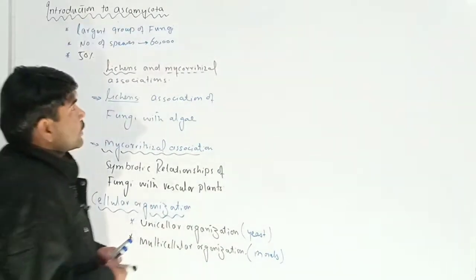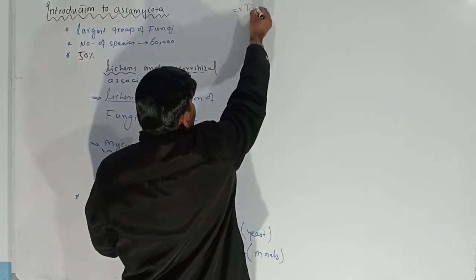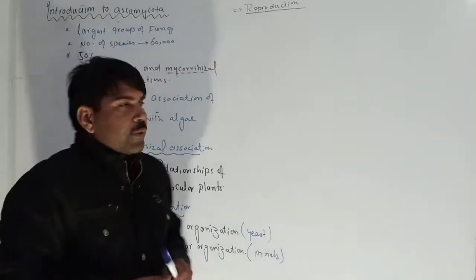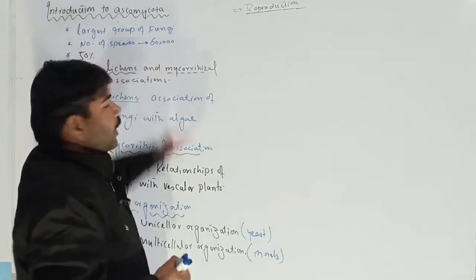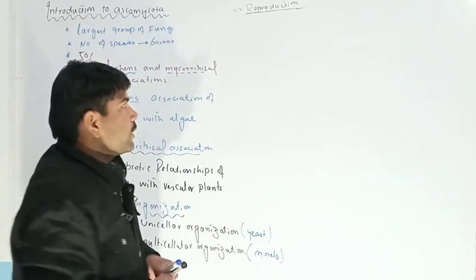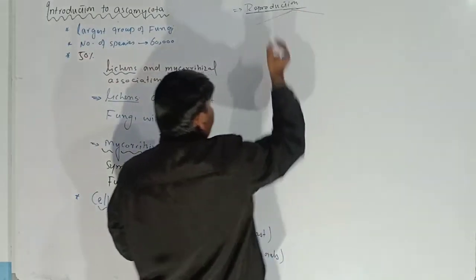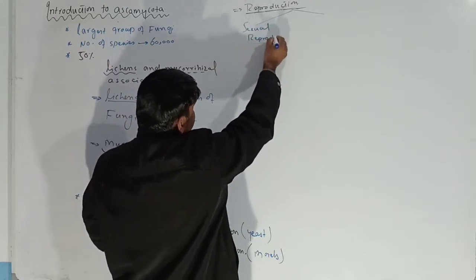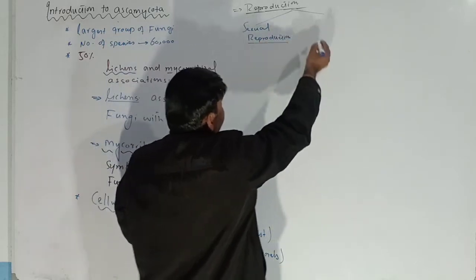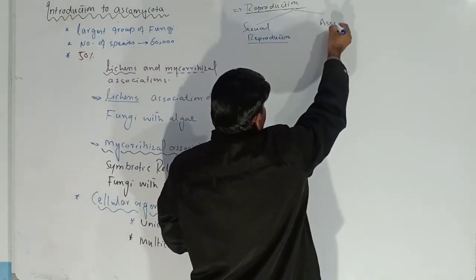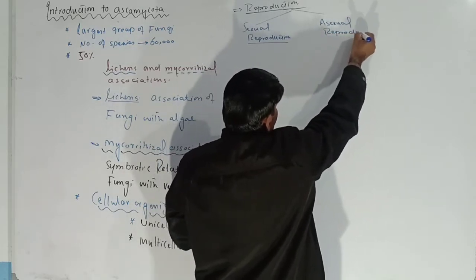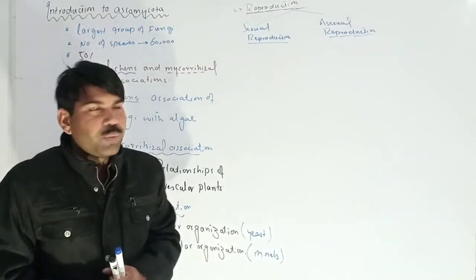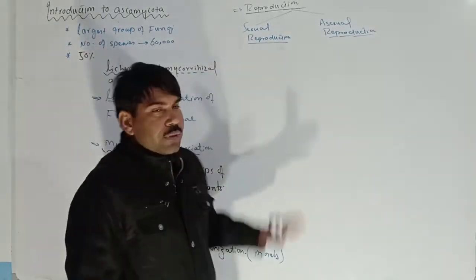The next point is reproduction. Both types of reproduction are present in Ascomycota, the largest group of fungi. The first is sexual reproduction and the second is asexual reproduction — both take place in this group.